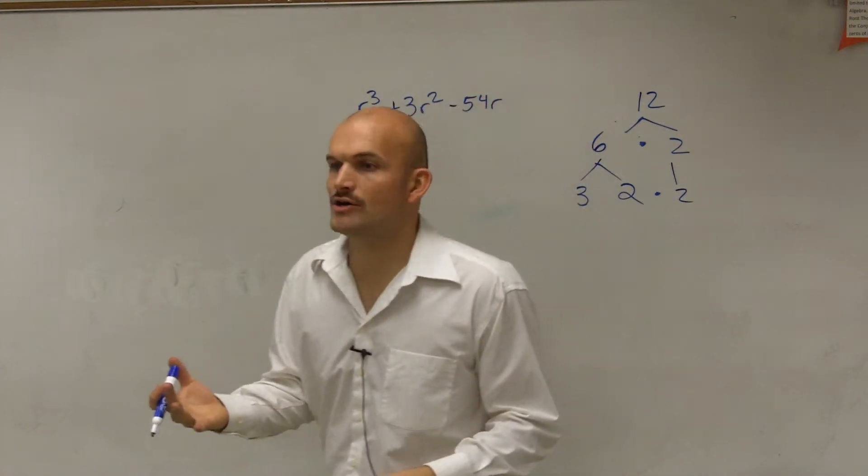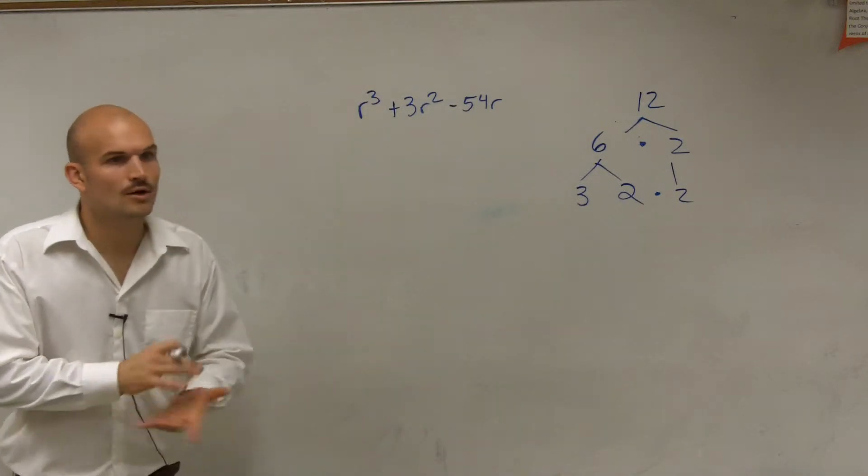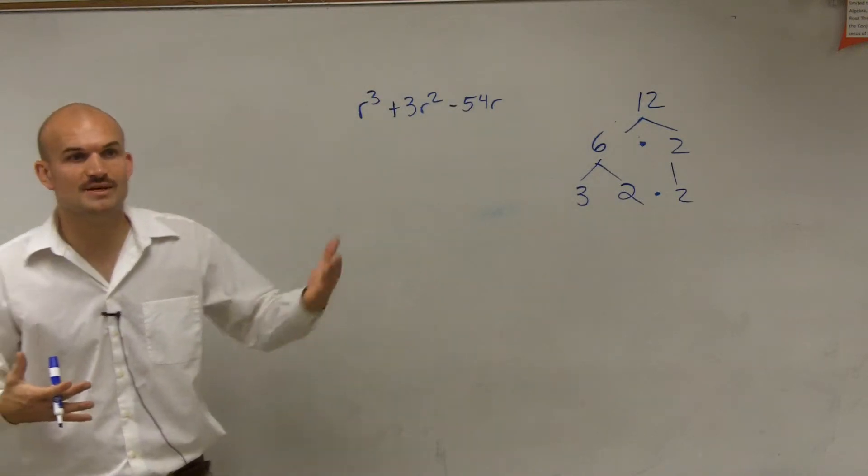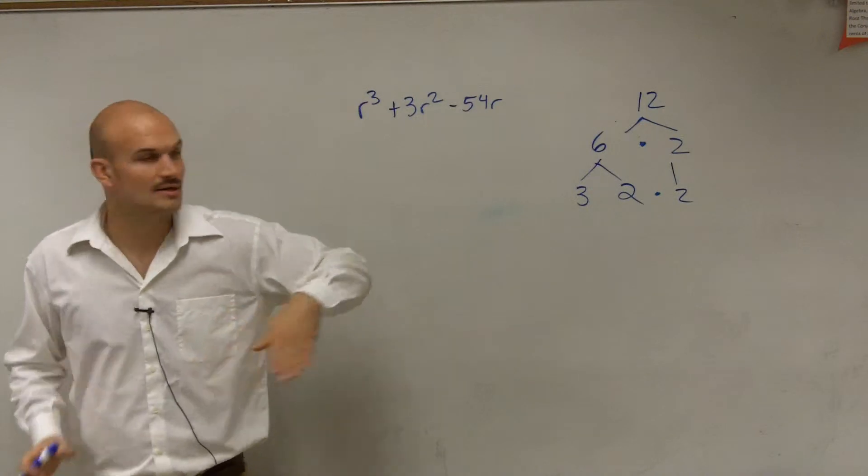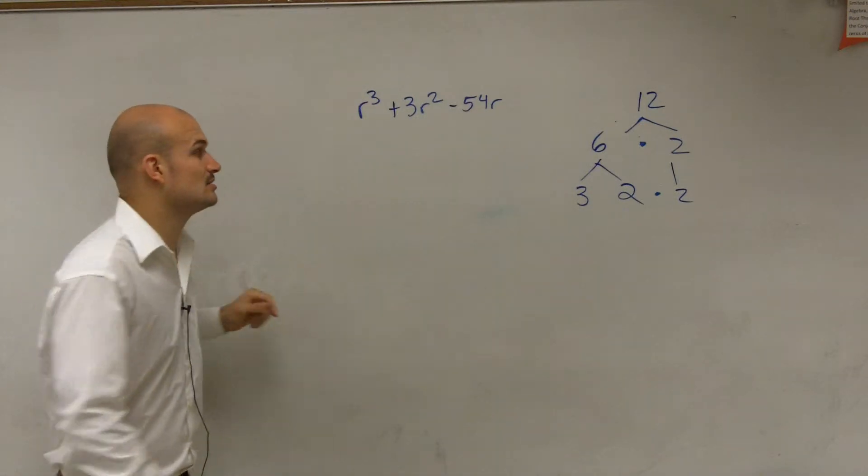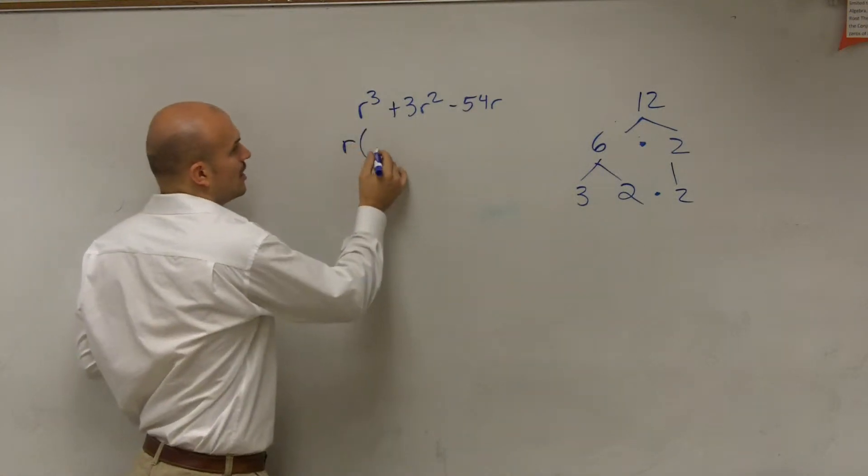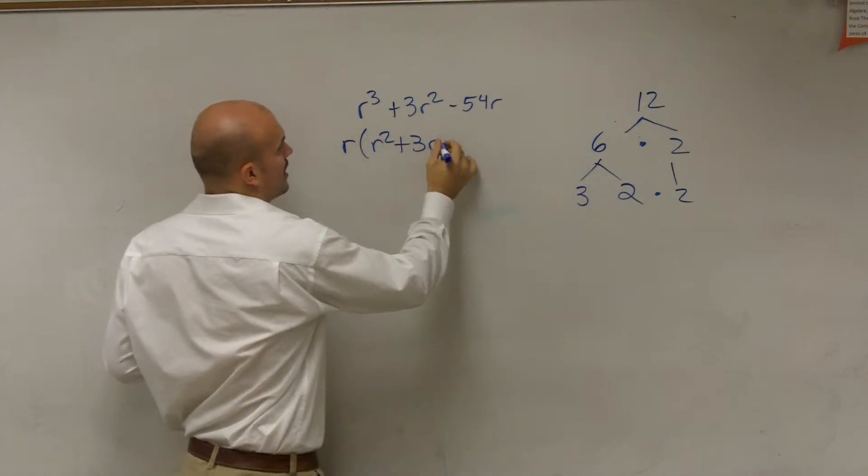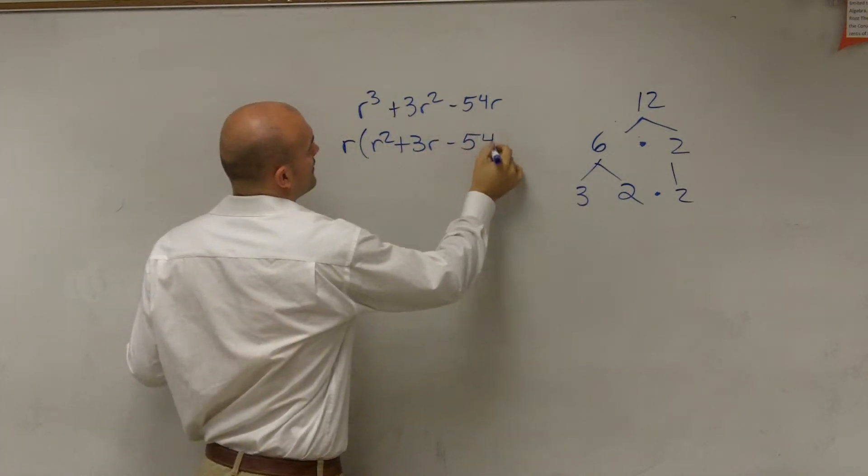So the first thing we always want to do is look for the GCF. What do they share? If they share something, we can easily factor that out. So we look at that, and they all share an R. So we factor out an R left with R squared plus 3R minus 54.